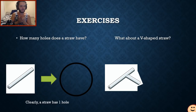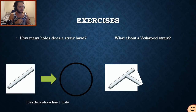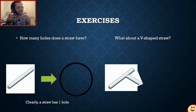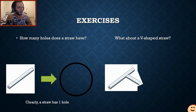Now, what about a V-shaped straw — what if we have a straw and then weld another tube to have another opening on the side? How many holes is this going to have? This one is a lot more controversial: now we have people saying three, others saying two, and some still saying one.